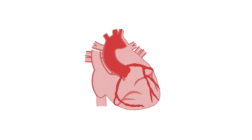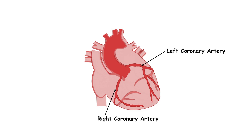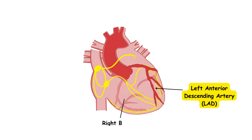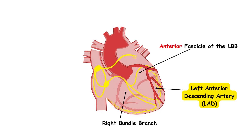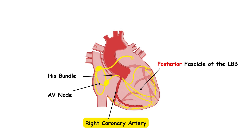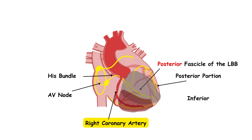The left coronary artery has two main branches: the anterior descending artery and the left circumflex artery. The left anterior descending branch supplies the right bundle branch and the anterior division of the left bundle branch, as well as the anterior portion of the left ventricle. The right coronary artery supplies the AV node, the His bundle, and the posterior fascicle of the left bundle branch. The right coronary artery also supplies the posterior portion of the left ventricle and the inferior portion of the heart, although in some cases the inferior portion is supplied by the left coronary artery.